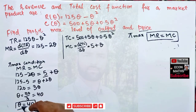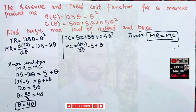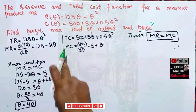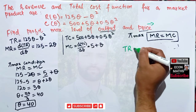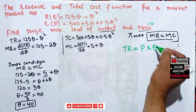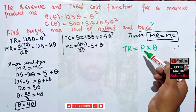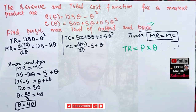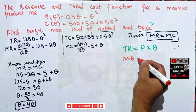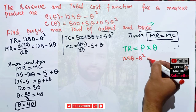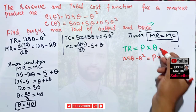Now we need to find the price. We know that total revenue equals price times quantity, TR = P × Q. Our total revenue function is 125Q minus Q squared, so we can write: 125Q minus Q squared = P × Q.